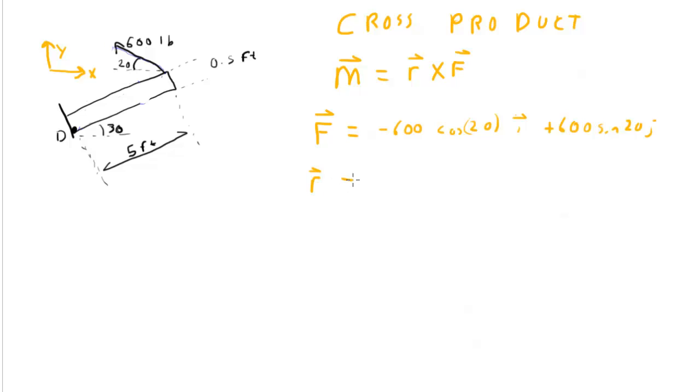R is some vector that points from position D to anywhere on the line of action of this force. I'm going to choose this point right here. So my R points in this direction. You should recognize that the magnitude of R is nothing more than the magnitude D prime that we calculated earlier.